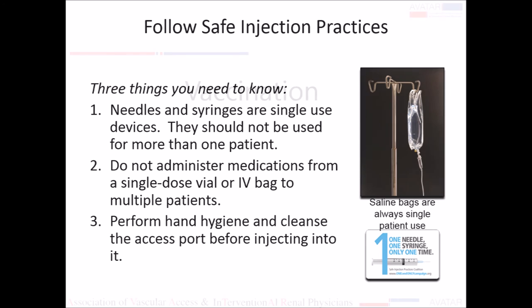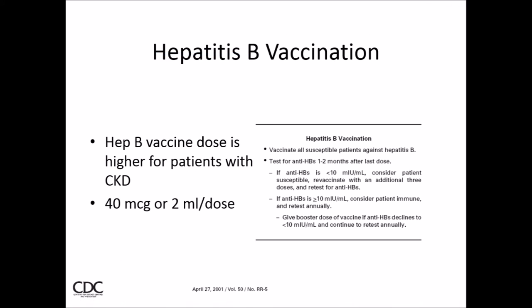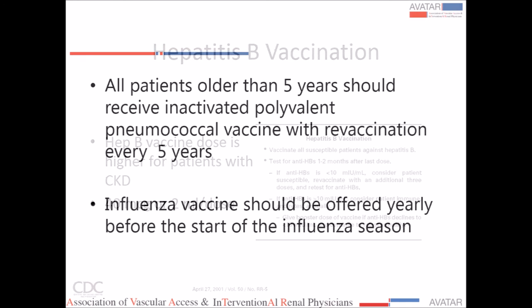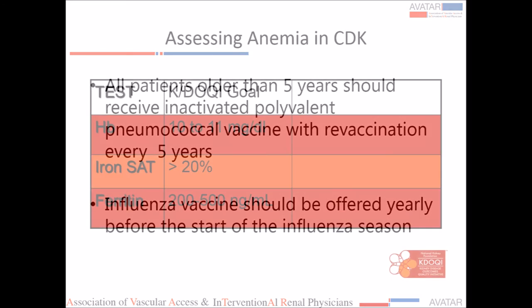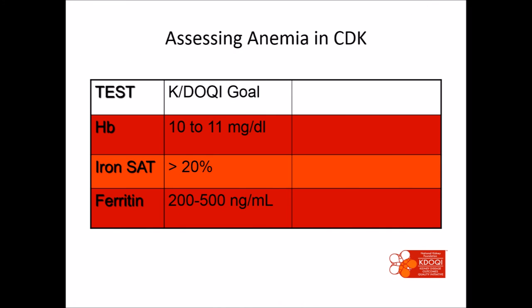Regarding vaccination — hepatitis B vaccination is mandatory, and antibody titers should be checked once vaccination is completed. Boosters should be given if titers are not at the level of 10 mIU per ml. Pneumococcal vaccination and influenza vaccine should be offered to every patient. For anemia management, the target hemoglobin is about 10 to 11 grams per deciliter, and all efforts should be maintained to keep the patient within this range.